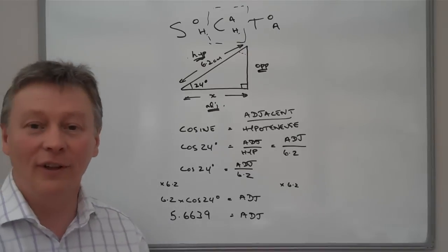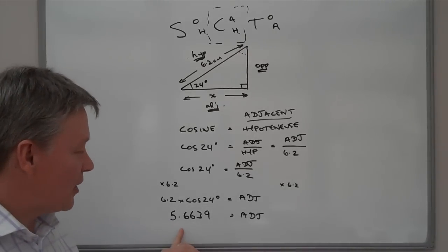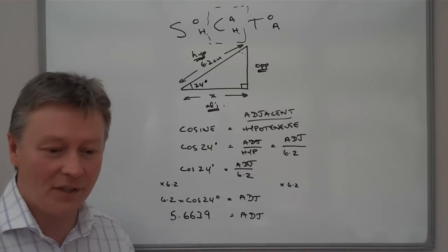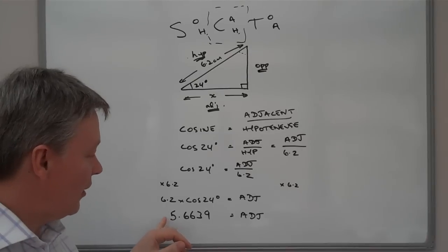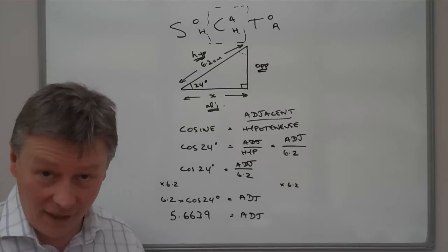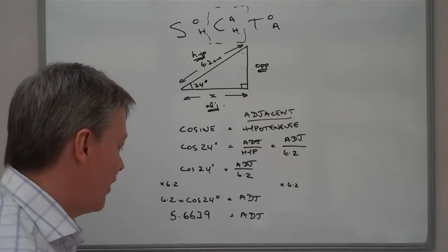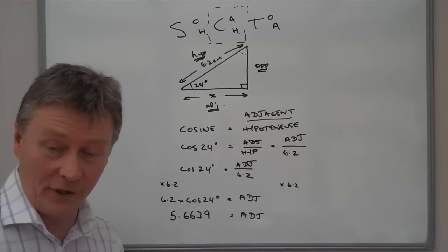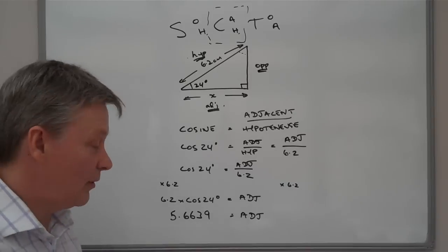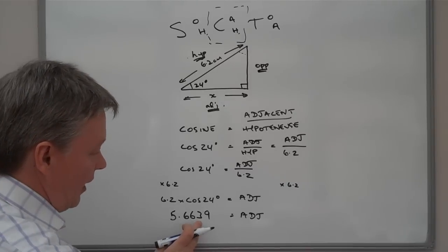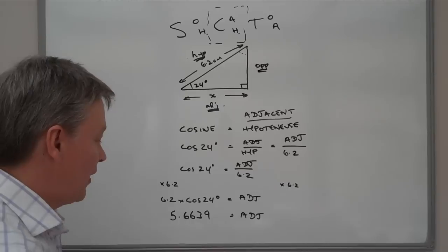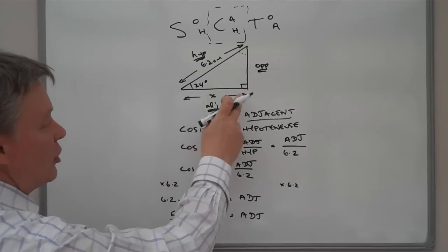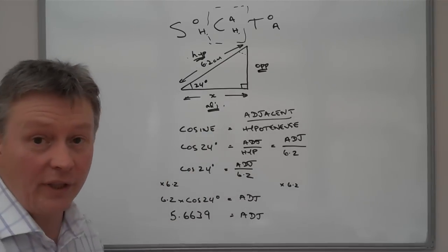So, with a lot of these questions, they wouldn't expect you to write this out to 10 decimal places. They would normally ask you, as it has done here, is to ask you to correct this to three significant figures. So, my third significant figure is 6. So, I look at my fourth in order to check whether I need to round it up or keep it the same. So, it's 3. If it's below 5, I'm going to keep it the same. So, to three significant figures, the value of the adjacent is 5.66.